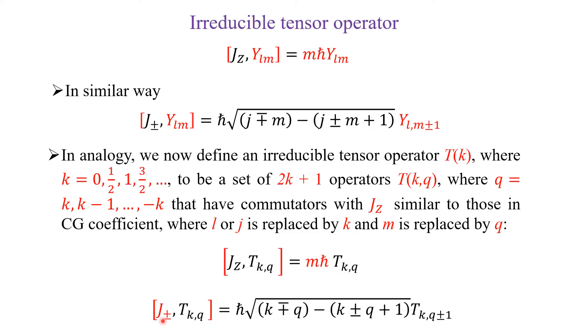Similarly, the commutation between J plus or minus and T_{k,q} is this one. Exactly. Just I have replaced J by k and M by q.